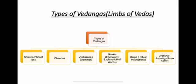Now, the types of Vedangas. If you look at the syllabus for NET and SET exams, this is specifically mentioned. 'Vedanga' means 'limbs of the Vedas' or 'arms of the Vedas.' There are six types of Vedangas: first, Shiksha; second, Chandas; third, Vyakaran (grammar); fourth, Nirukta (etymology/explanation of words); fifth, Kalpa (ritual instructions); and sixth, Jyotisha, which means Astrology and Astronomy. These six are the arms of the Vedas — without them, the Vedas are incomplete.